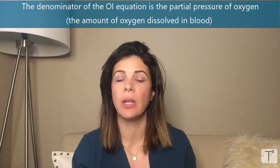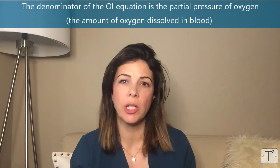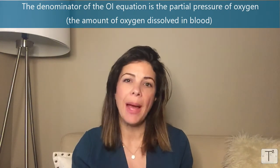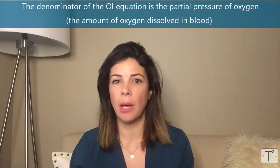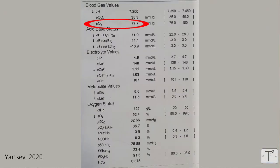The third thing you need to know is that the denominator of the equation is the partial pressure of oxygen, which is the amount of oxygen dissolved in blood. When you get an arterial blood gas, the PaO2 is the number after the pH and PaCO2 — that is your denominator. The more oxygen dissolved in blood, the better the lungs are functioning, and therefore the lower the oxygenation index.